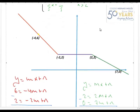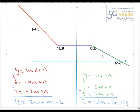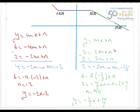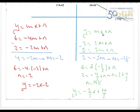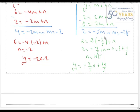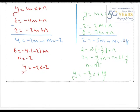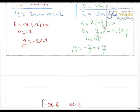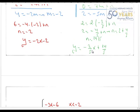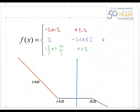La última recta sigue el mismo proceso. Le indico que pase por el punto (2, 2) y por el punto (7, 0). Le digo: cuando x=2, y=2, es decir 2 = 2m + n; y cuando x=7, y=0. Aplicando el método de reducción, la m da -2/5. Sustituyendo: n = 2 + 4/5 = 14/5. Por tanto la tercera rama es y = (-2/5)x + 14/5.